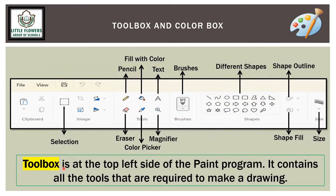The toolbox is on the top left side of the Paint program. It contains all the tools required to make a drawing — such as selection, pencil, color text, eraser, color picker, and brushes. With brushes you can fill color in your object. There are also different shapes for giving outlines, fill outlines, and you can increase or decrease shape size.